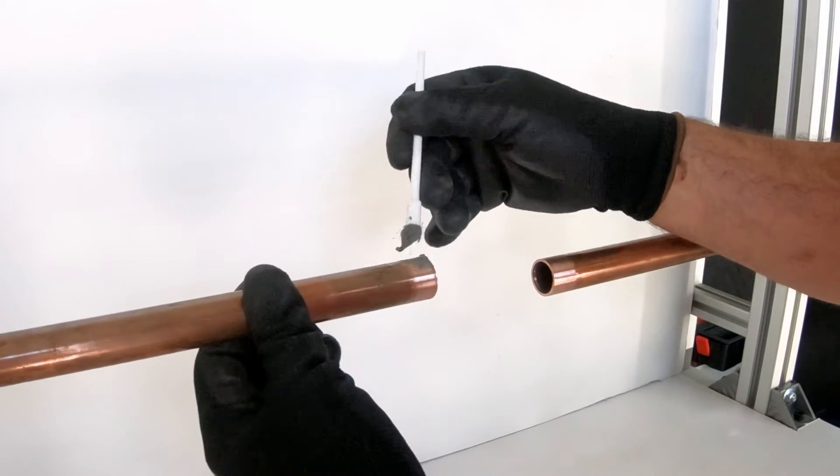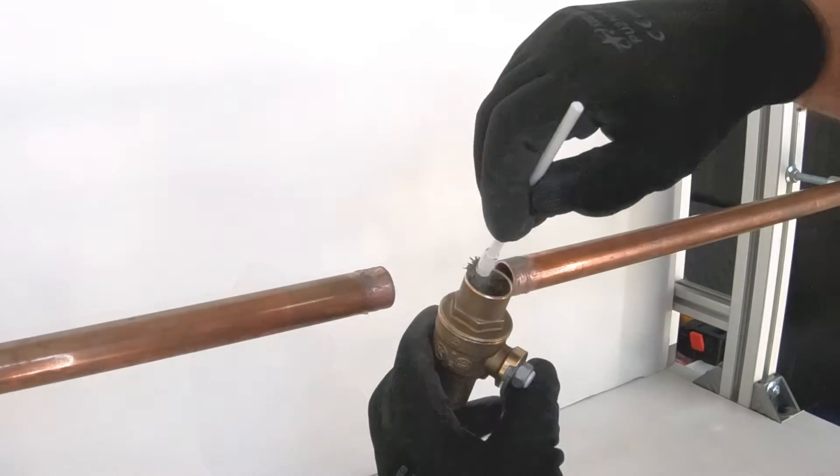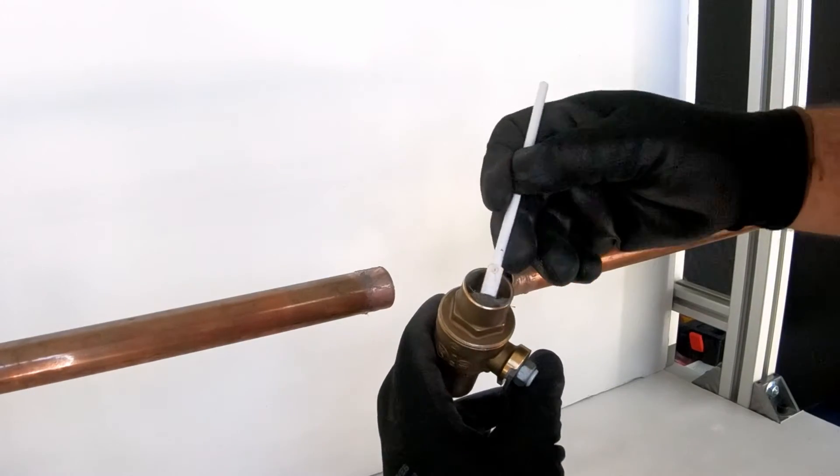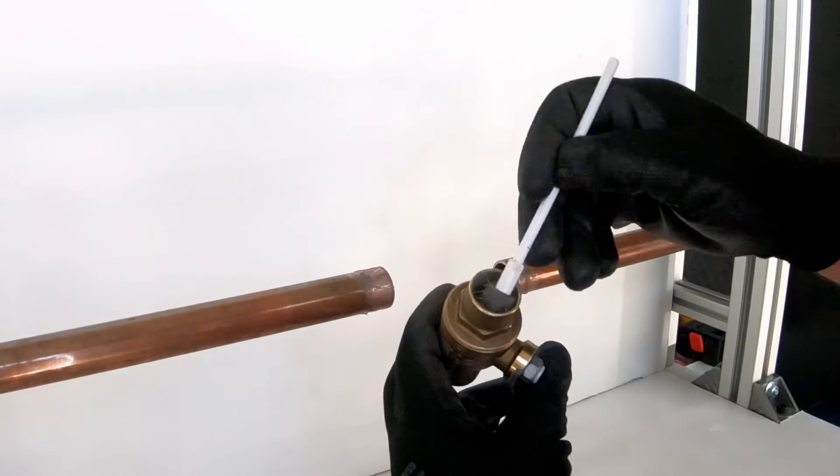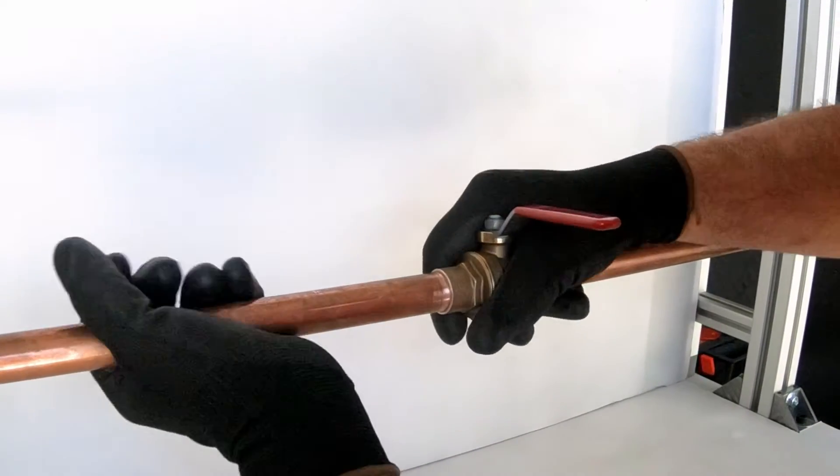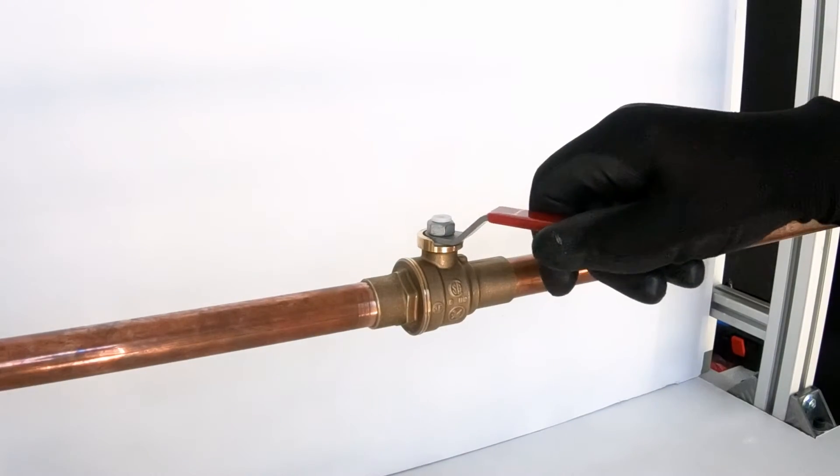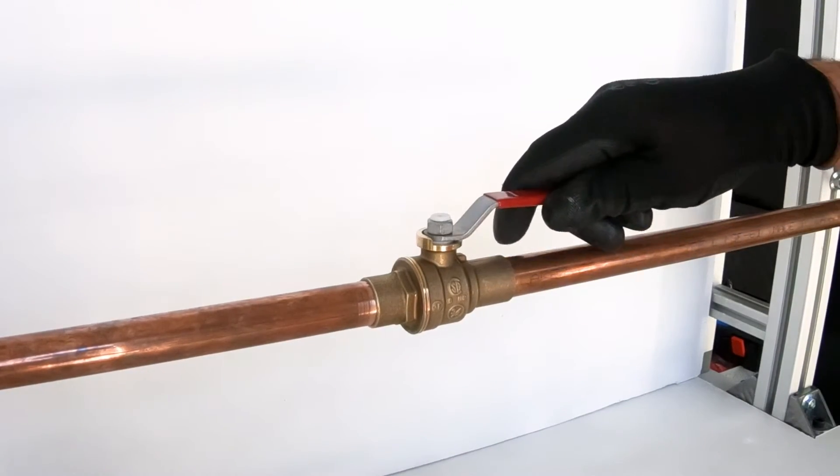First, add flux to both joining surfaces of the tube and valve cups, and insert the pipe into the valve cup. It is important to assure valve is in open position to allow heat to escape.